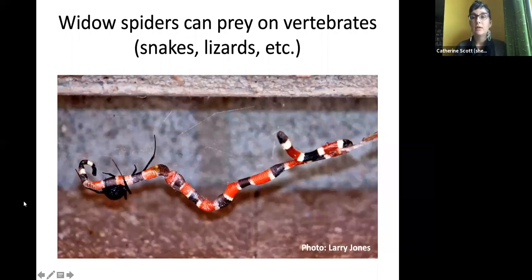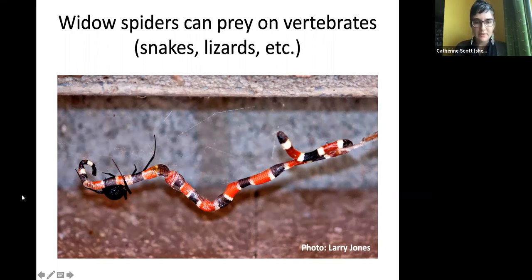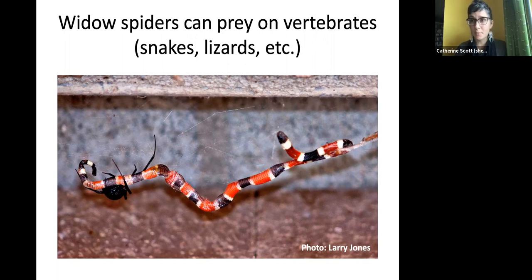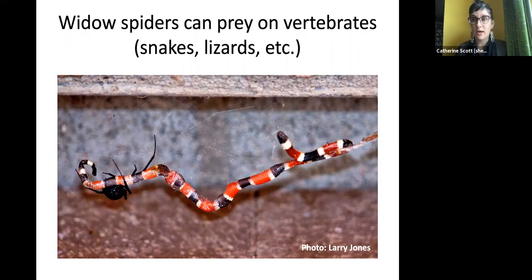Black widows are unusual among spiders in that they can prey on vertebrates — snakes, lizards, and small rodents. Here's a picture of a black widow from the southwestern United States with a coral snake. They've evolved to capture vertebrate prey, and since we are vertebrates, this is why black widows can be dangerous to humans: they have venom components that are toxic to vertebrates.